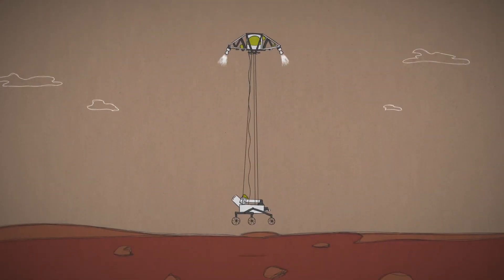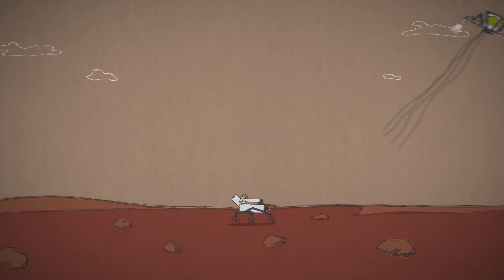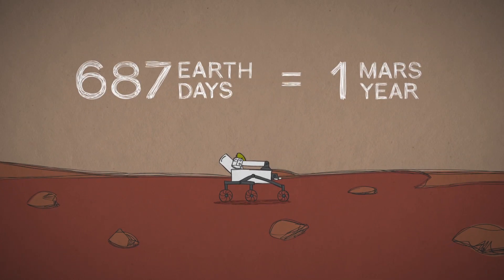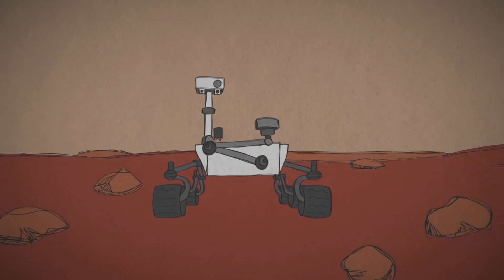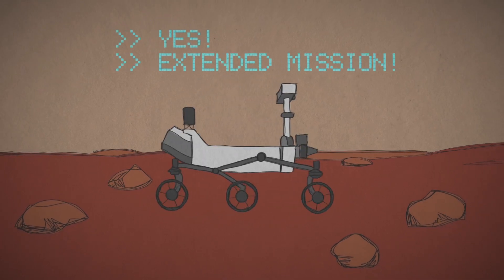When the Curiosity rover got to Mars, its mission was to explore Mars for at least 687 Earth days, one Mars year. But like our other long-lasting rovers, it hit its target and kept on rolling.